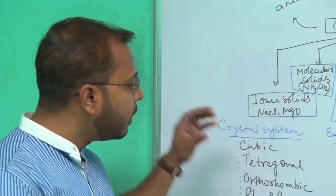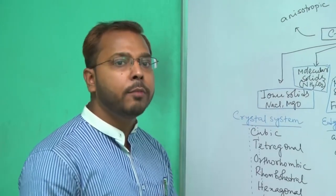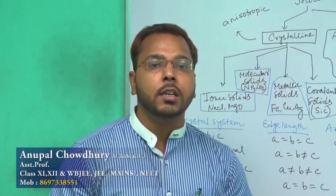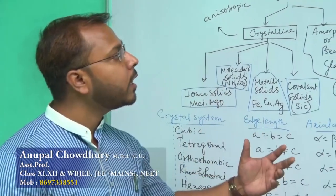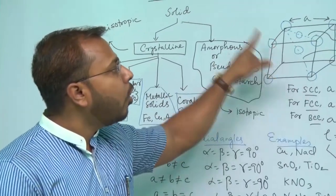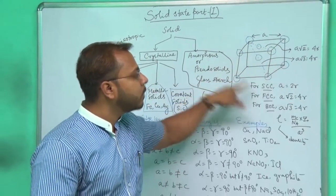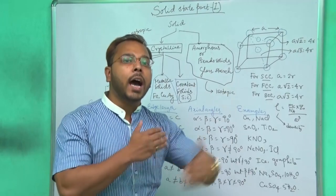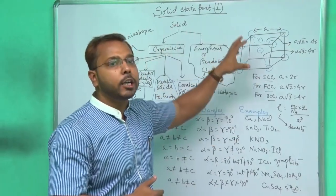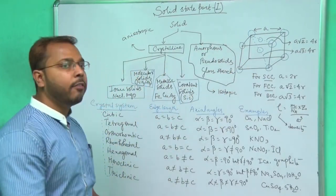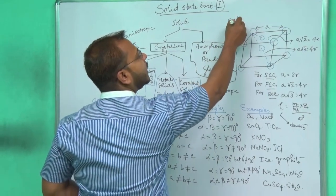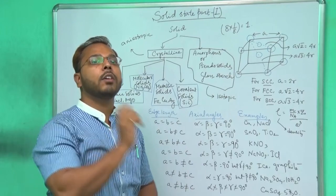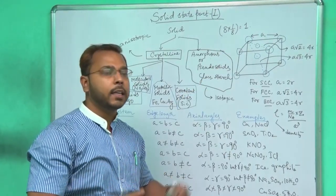If you remember this trick, no angles or edge lengths will be problematic. Now for the cubic crystal system, we have simple cubic (SCC), body-centered cubic (BCC), and face-centered cubic (FCC). In simple cubic, atoms are only at the corners. A cube has eight corners, and each corner atom is shared by eight other cells, so its contribution is 1/8. Therefore the per unit cell contribution for SCC = 8 × (1/8) = 1.